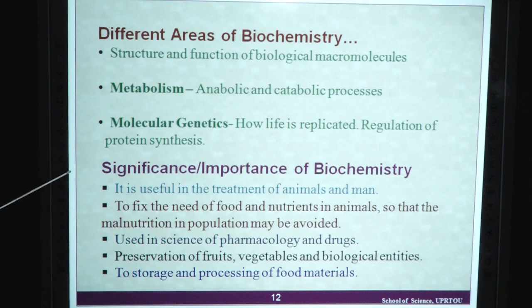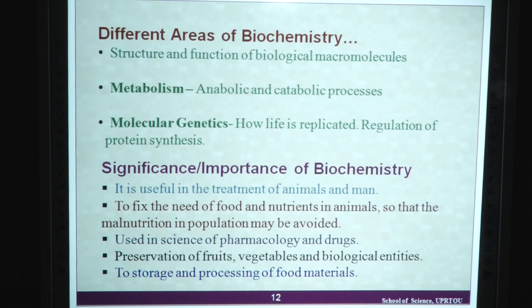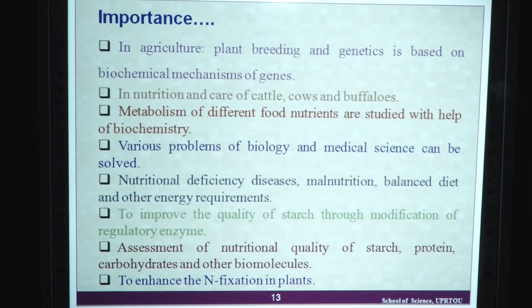We have different areas under biochemistry: structure and function of biological macromolecules; metabolism, which is of two types — anabolic and catabolic processes; molecular genetics — how life is replicated and regulation of protein synthesis. We have many significant applications of biochemistry. It is useful in the treatment of animals and humans, and to fix the need of food and nutrients in animals so that malnutrition in the population may be avoided. Biochemistry has applications in pharmacology and drugs, preservation of fruits, vegetables and other biological entities, and storage and processing of food materials. In the agricultural sector, plant breeding and genetics is based on biochemical mechanisms of genes.